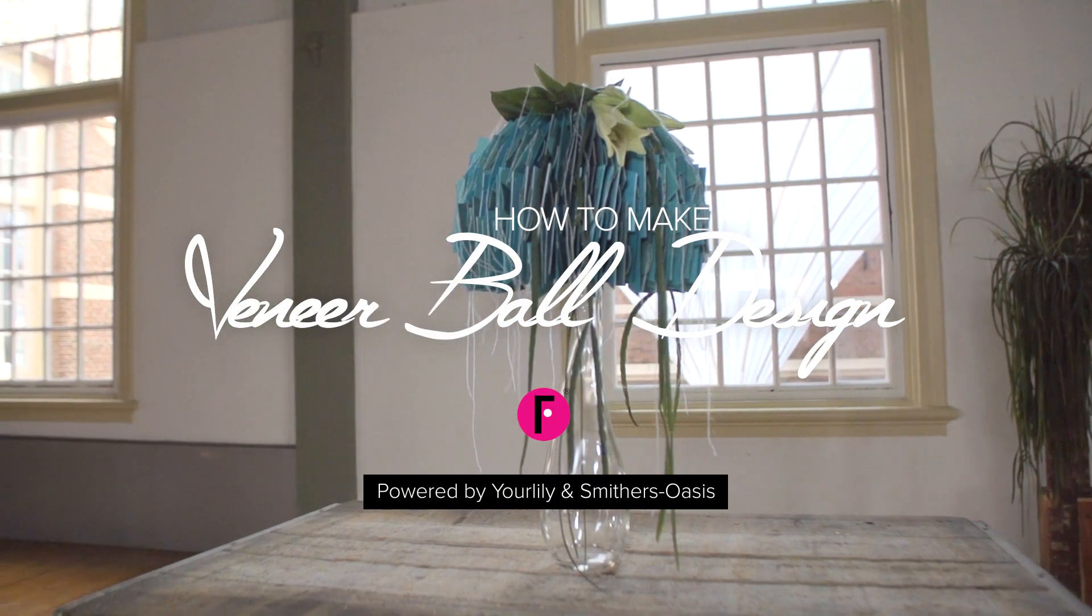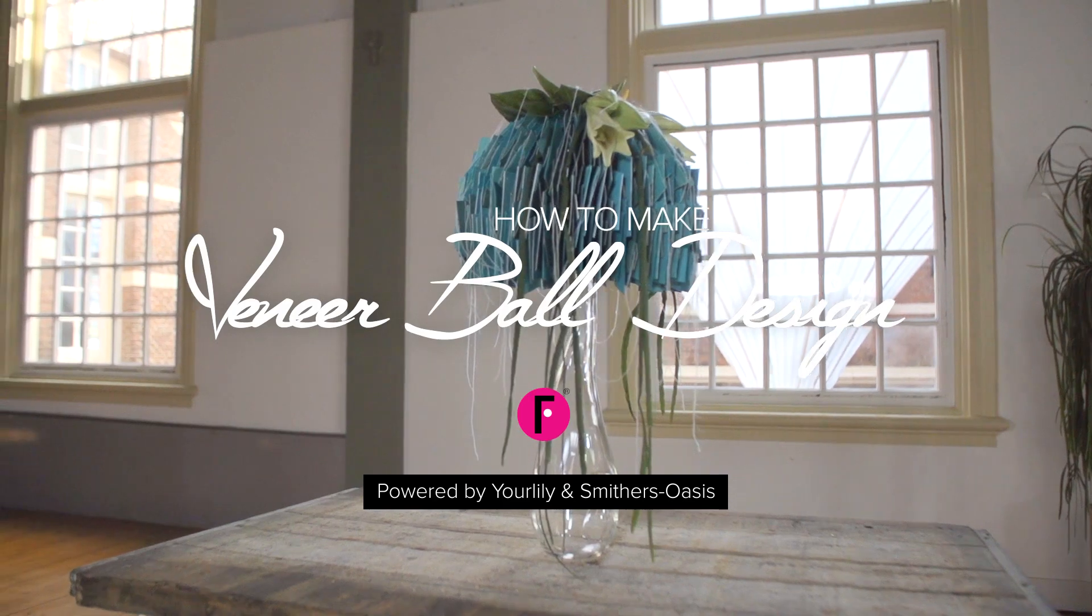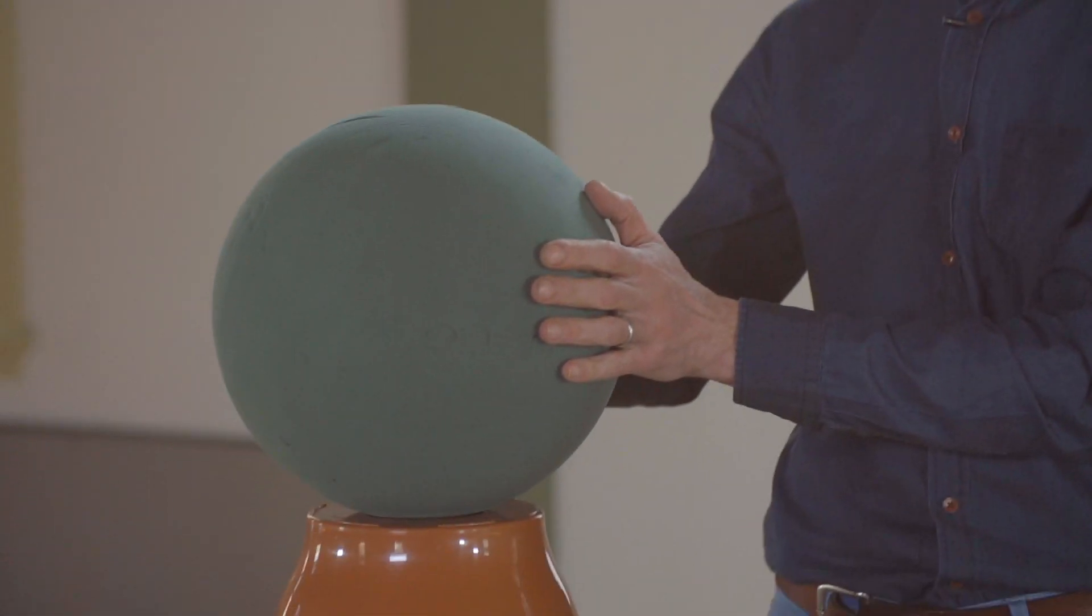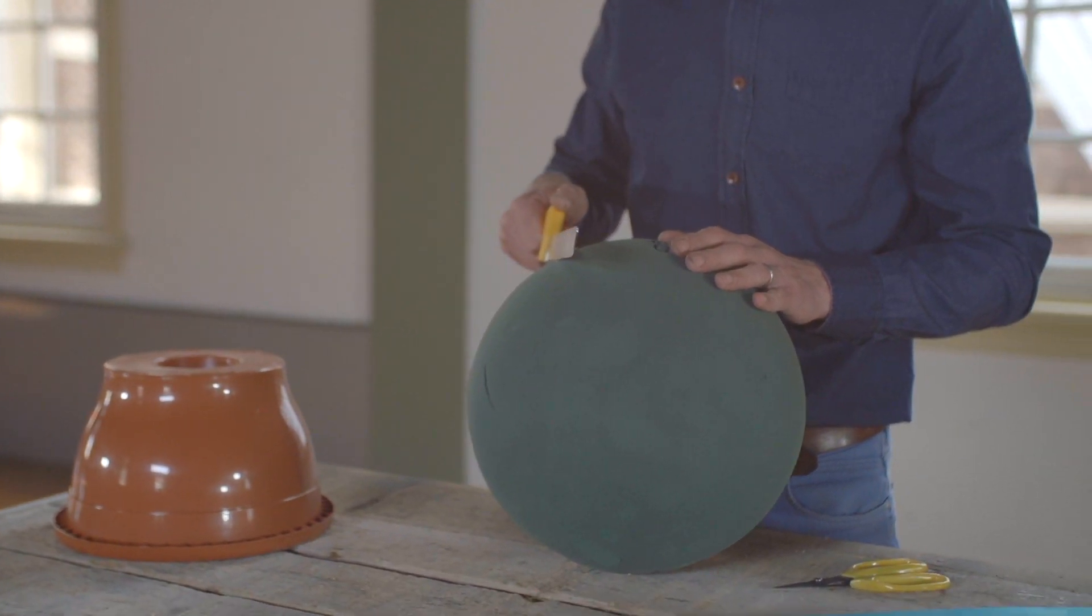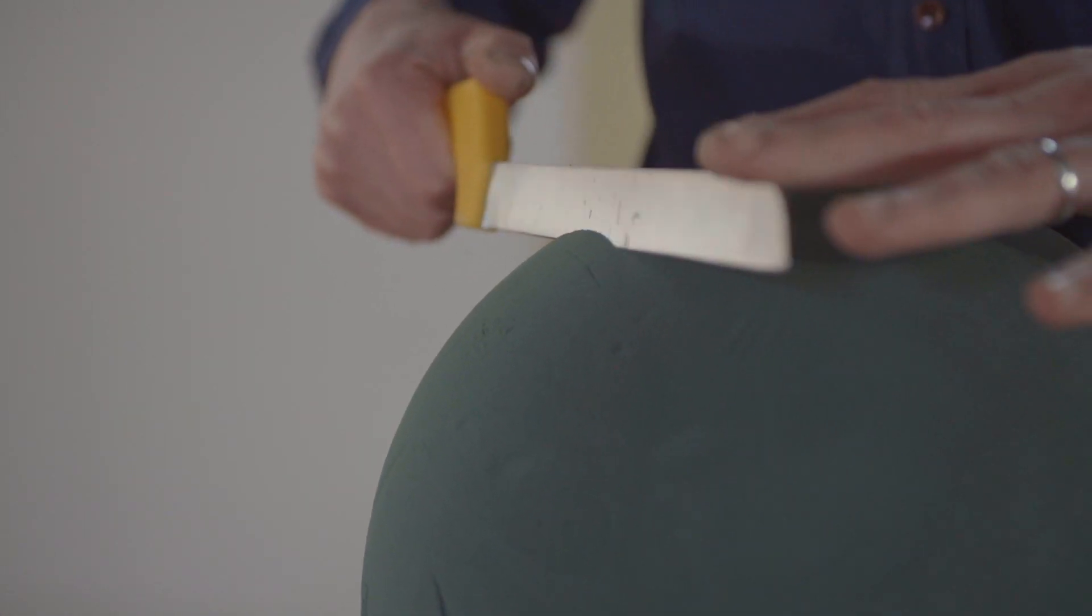This design is all about form and shape. We're going to start by taking an oasis sphere. The first thing to do is trim a little section off, not going halfway, just taking off a section.